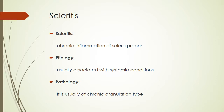The pathology of scleritis is usually of the chronic granulation type. It consists of fibrinoid necrosis and destruction of collagen, together with infiltration by polymorphonuclear cells, lymphocytes, plasma cells, and macrophages.